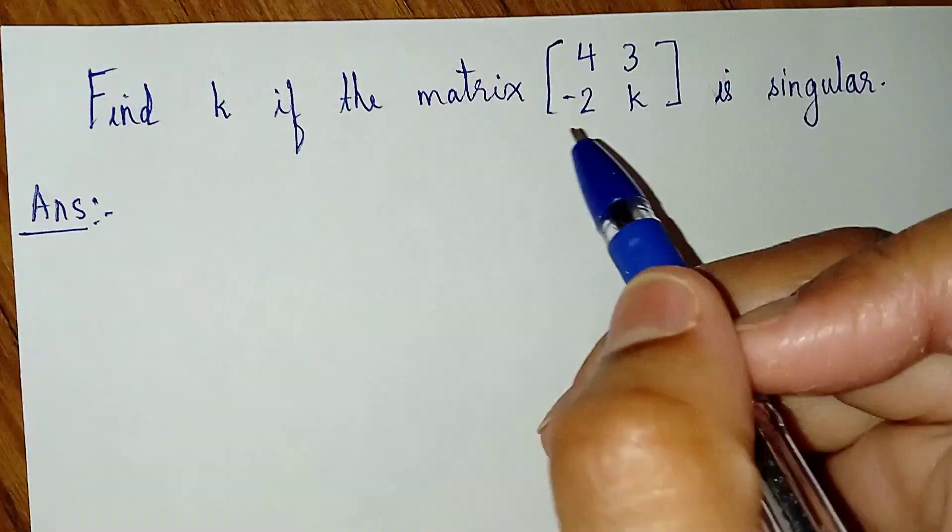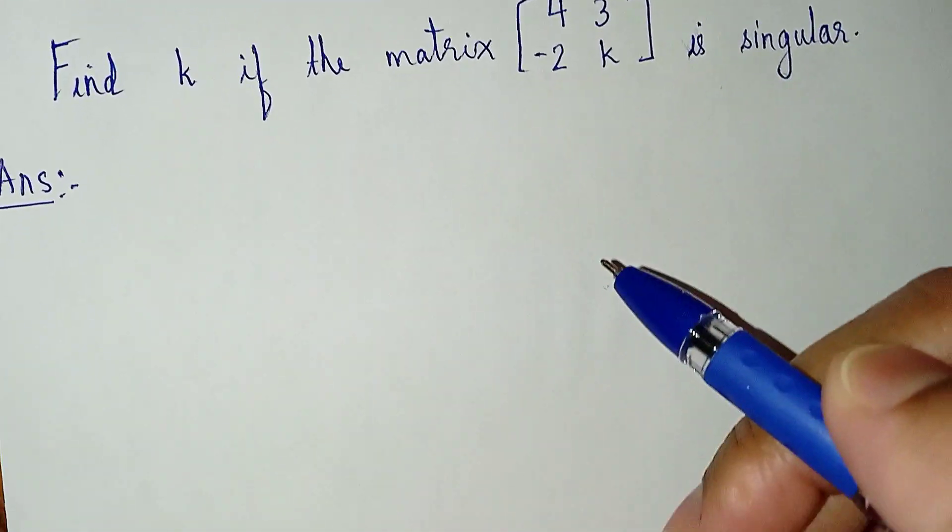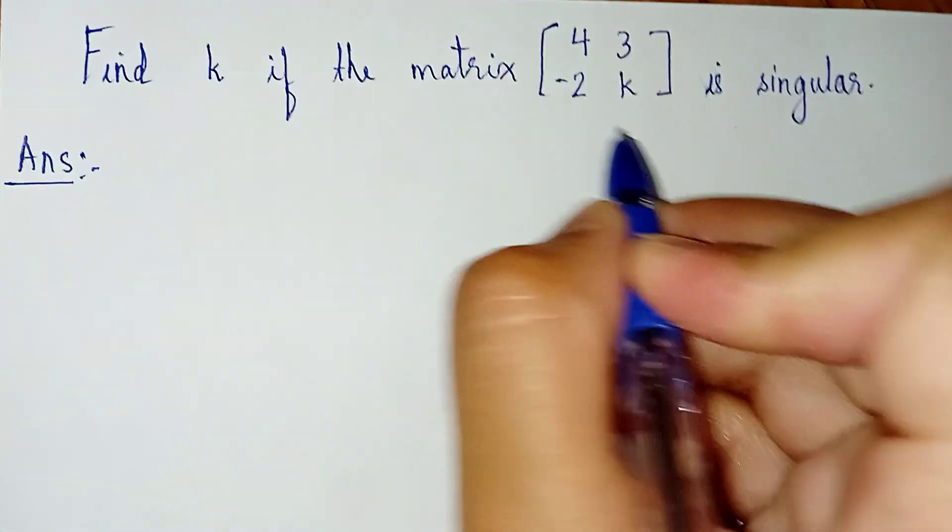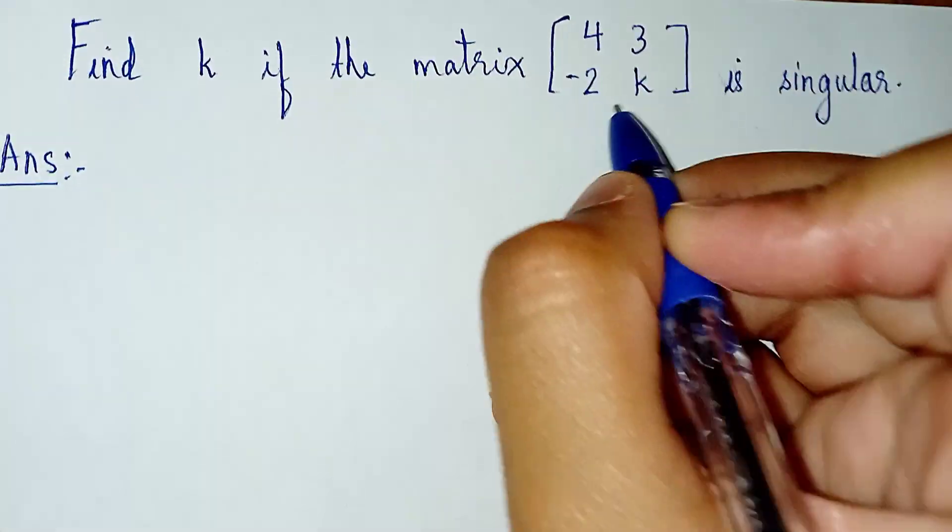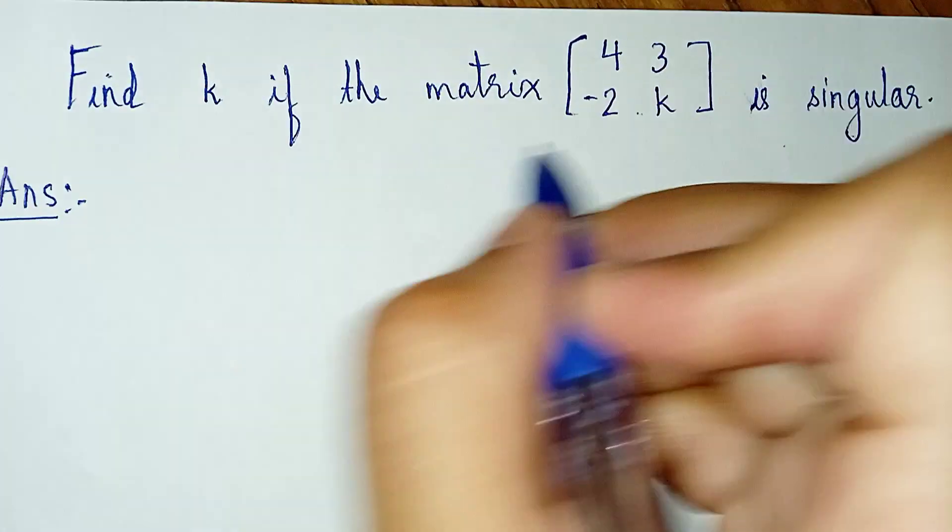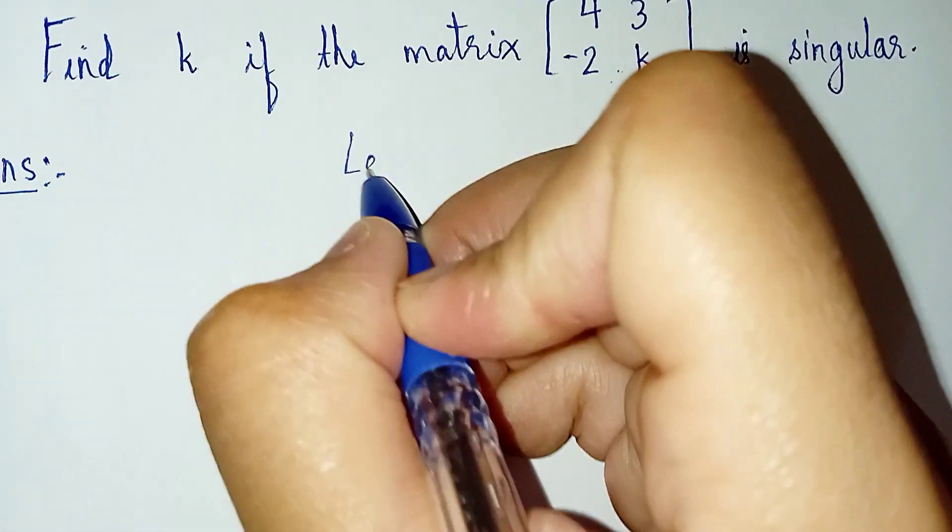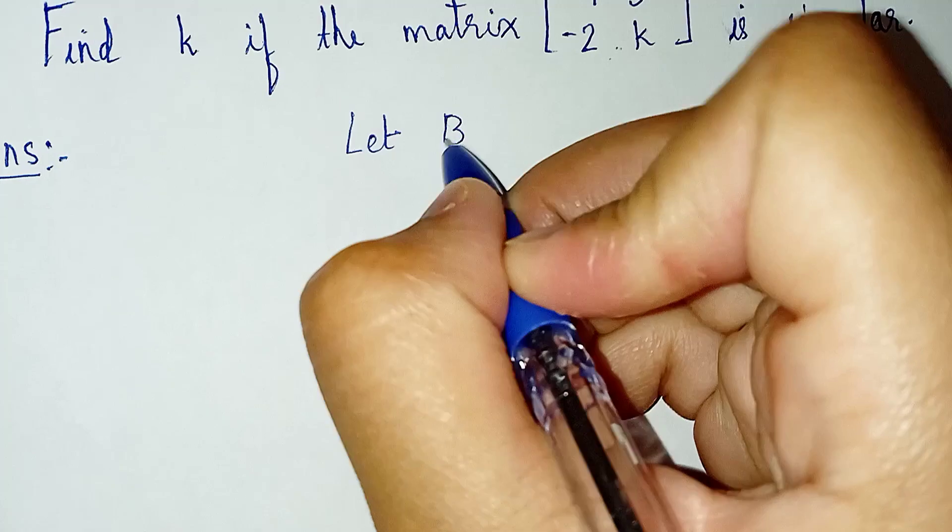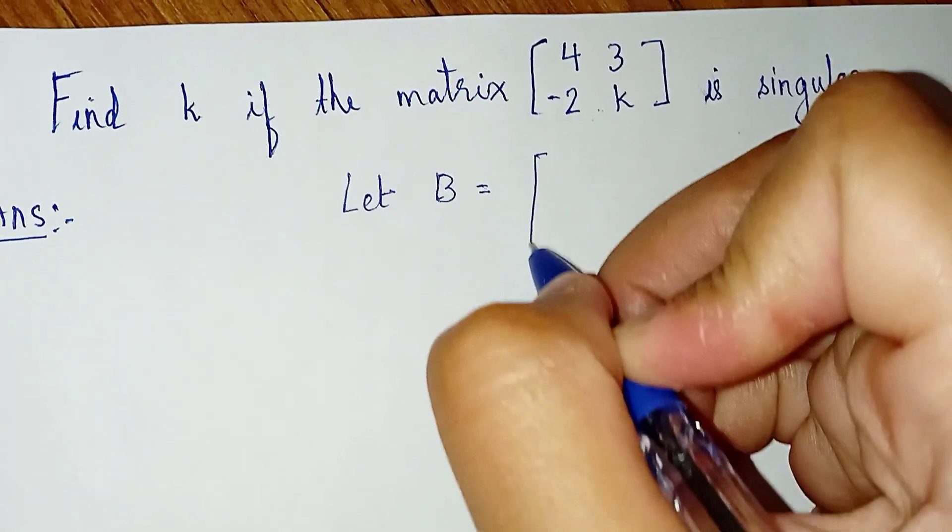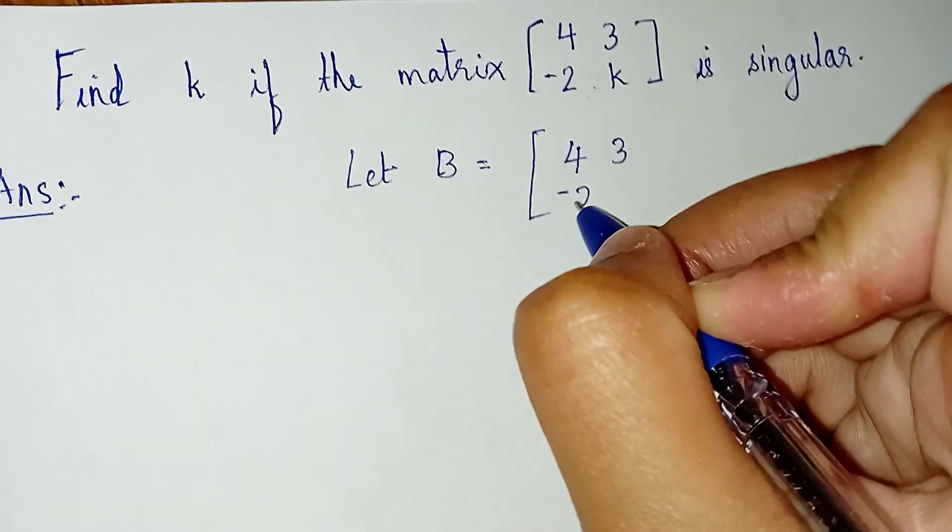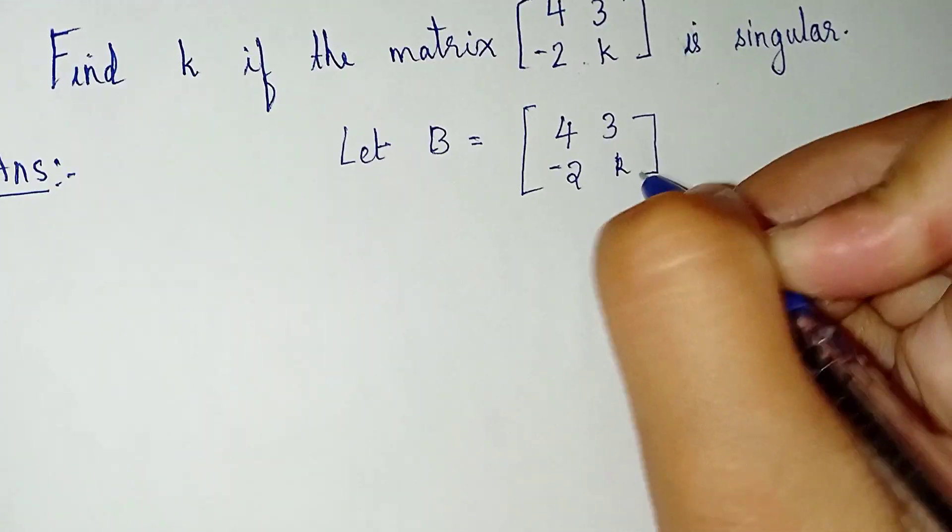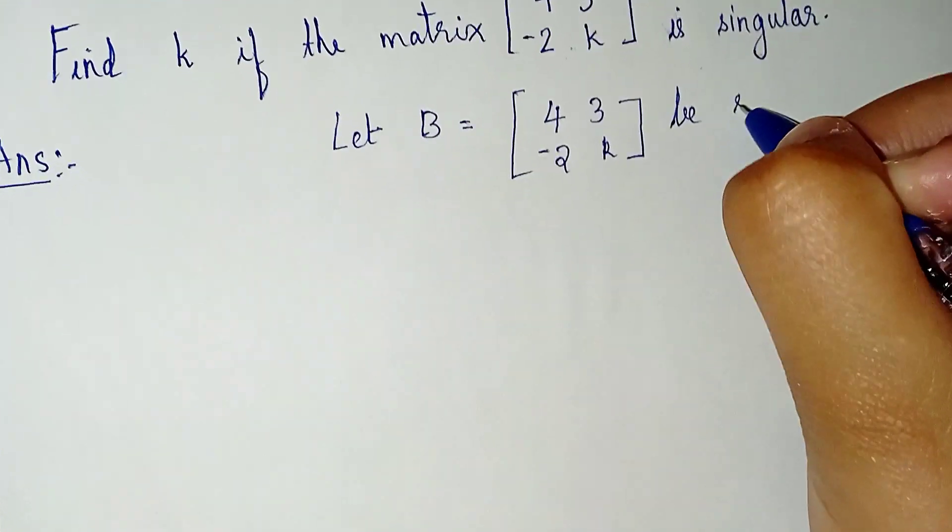Find k if the matrix is singular. So for solving this question, we must name this matrix. Let this matrix be B. So let B, which is equal to [4 3; -2 k], be singular.